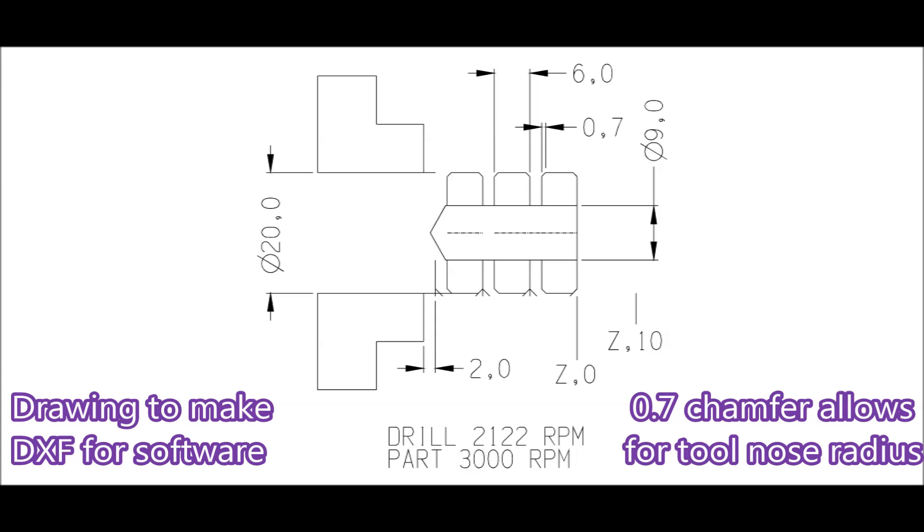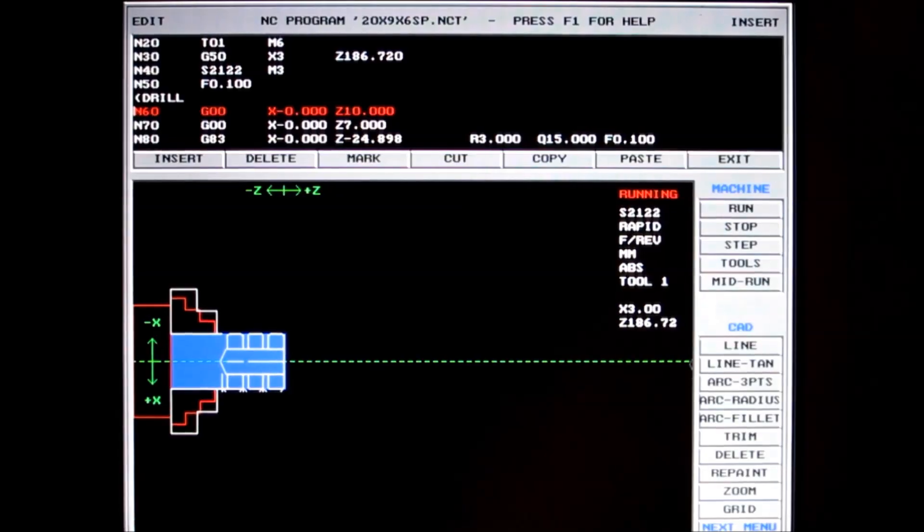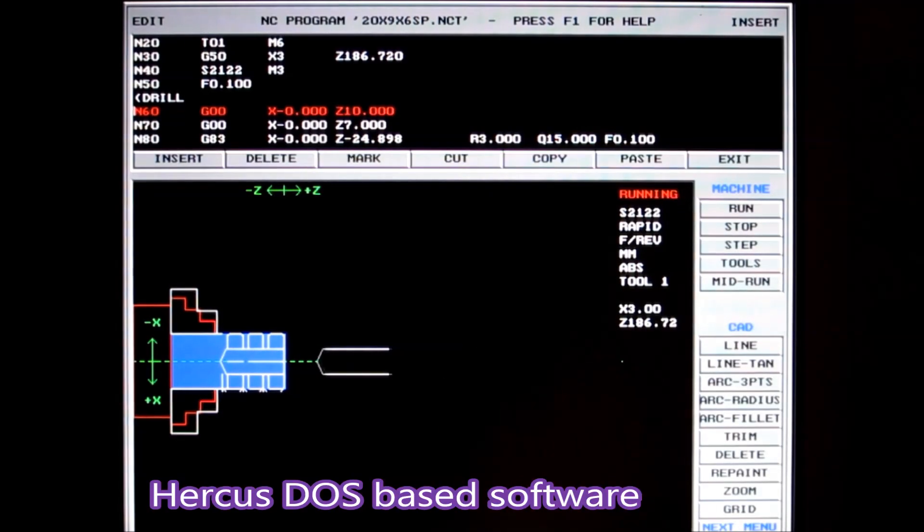To the software that Hercus provides that runs this machine, it's also CAD-CAM. I only use the CAM part of it. The little bit sticking out that you see at the bottom there is so that the rapids go up to there and they don't bump into the actual material.